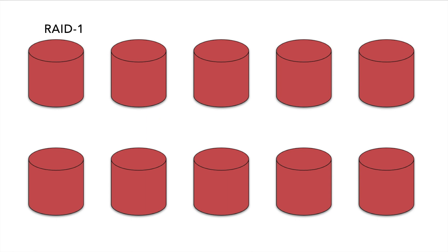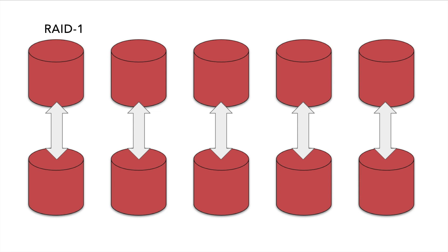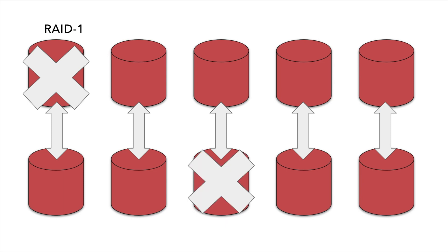RAID 1 is the simplest way to secure data, and it does this by mirroring disks. Most servers use RAID 1 to mirror two boot drives and thus protect the operating system. RAID 1 can survive a single disk failure, and it can even survive multiple disk failures, but it cannot survive the failure of two mirrored disks.